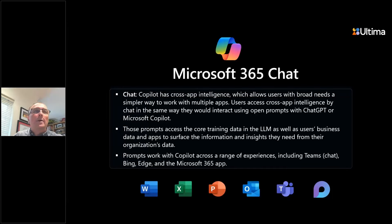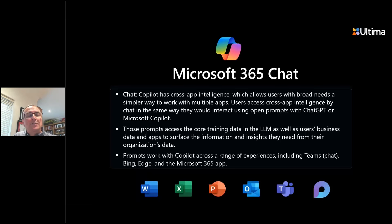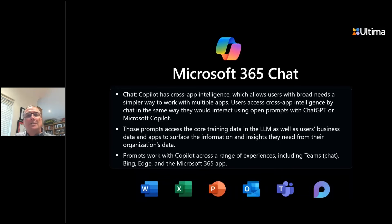Before getting into the demo, the last thing to mention is Microsoft 365 Chat. When you first load this software it appears in lots of different places — we'll show you that as we go through the application demos. The ability to use those prompts with the large language model appears in Teams, in Bing on Edge, and in most of your 365 apps today. We'll take you through that and show you what it looks like, because it's very important to get familiar with where this stuff appears and how you start to use it.